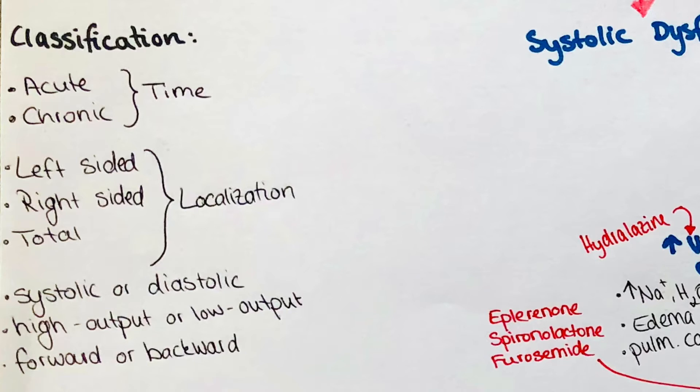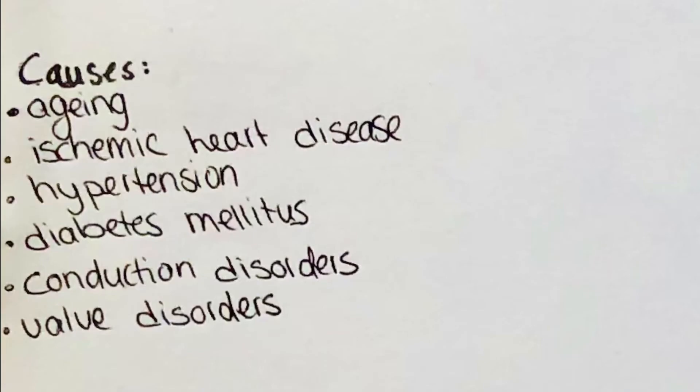Causes of heart failure are even more abundant than the types we can differentiate. It can be caused by general weakening of the body by aging, ischemic heart disease, hypertension, diabetes mellitus, different conduction disorders or valve disorders. The causes we will discuss more comprehensively when we will speak more about the left and right-sided heart failure.